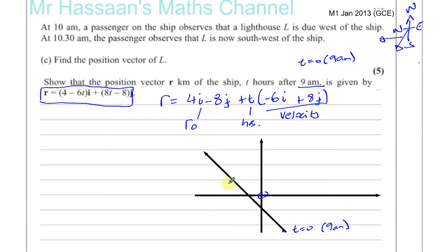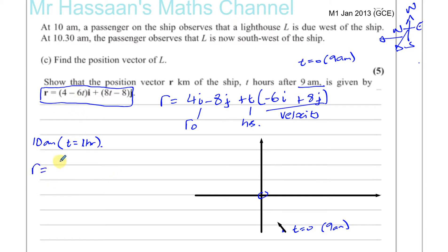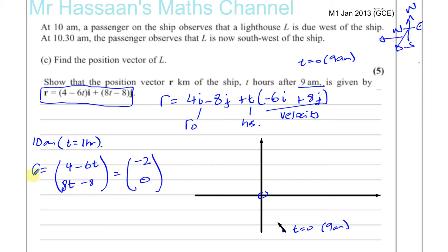The ship is moving in the direction minus 6i plus 8j — something like this on the sketch. At 10 a.m., time is one hour. We can find its position vector: r equals 4 minus 6t for the i component and 8t minus 8 for the j component. Substituting t equals 1 gives 4 minus 6 which is minus 2, and 8 minus 8 which is 0. So the position vector at 10 a.m. is minus 2i.